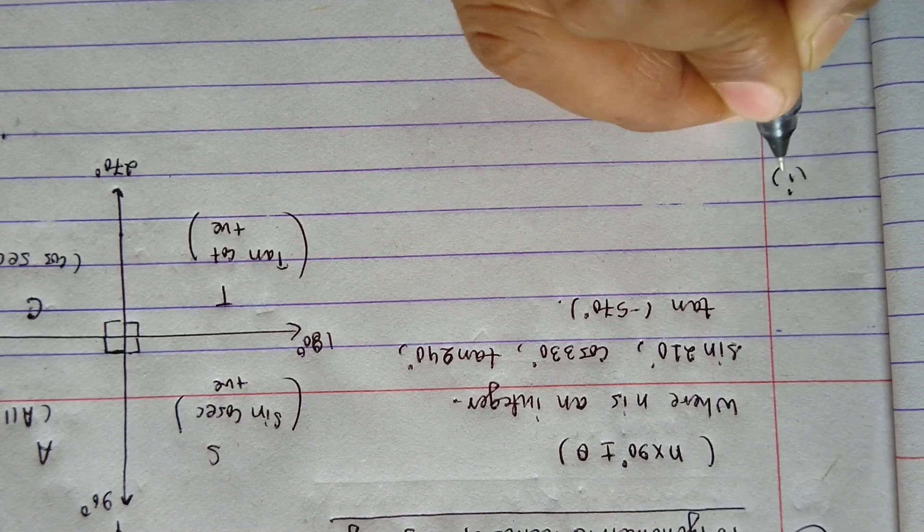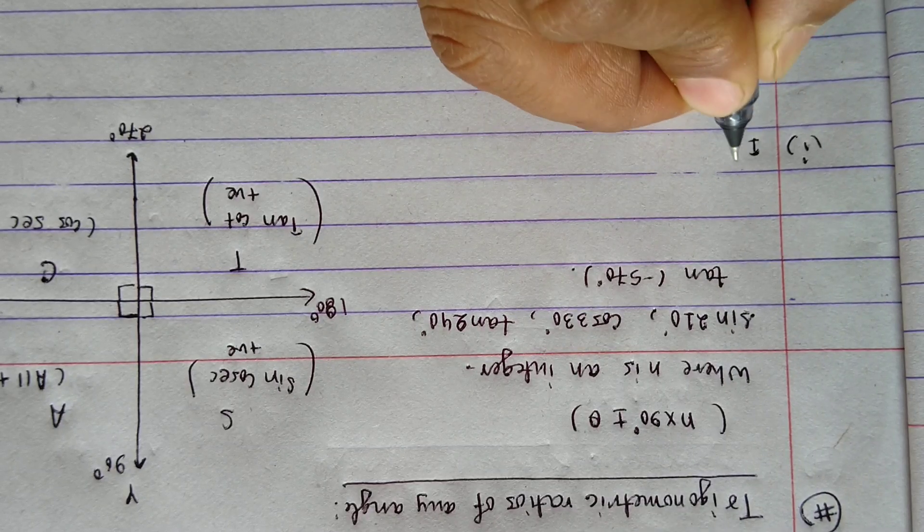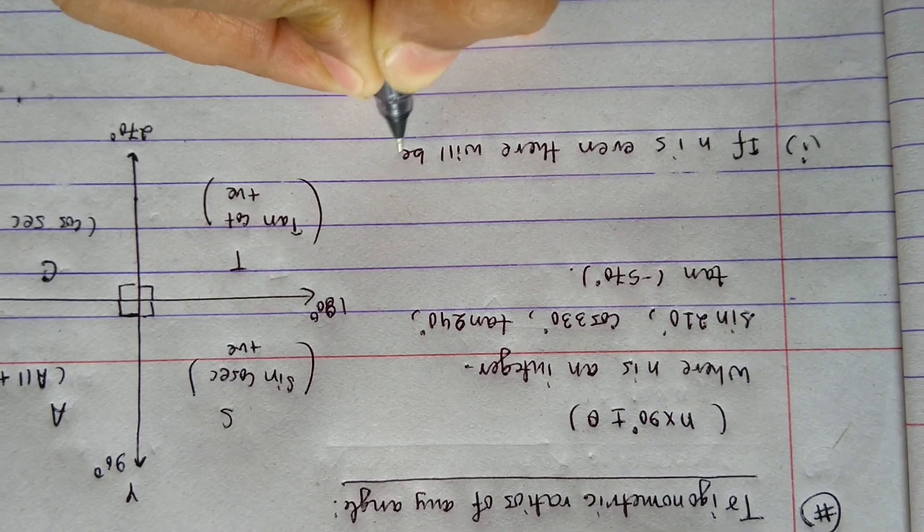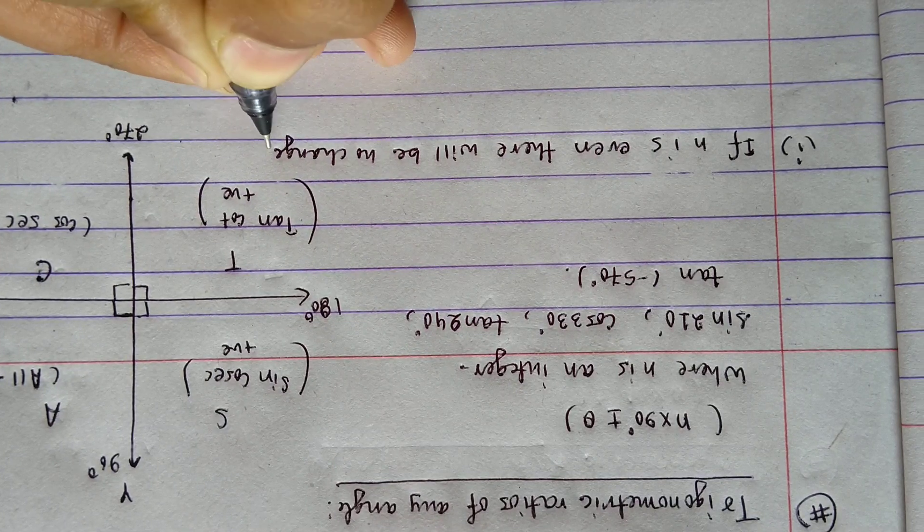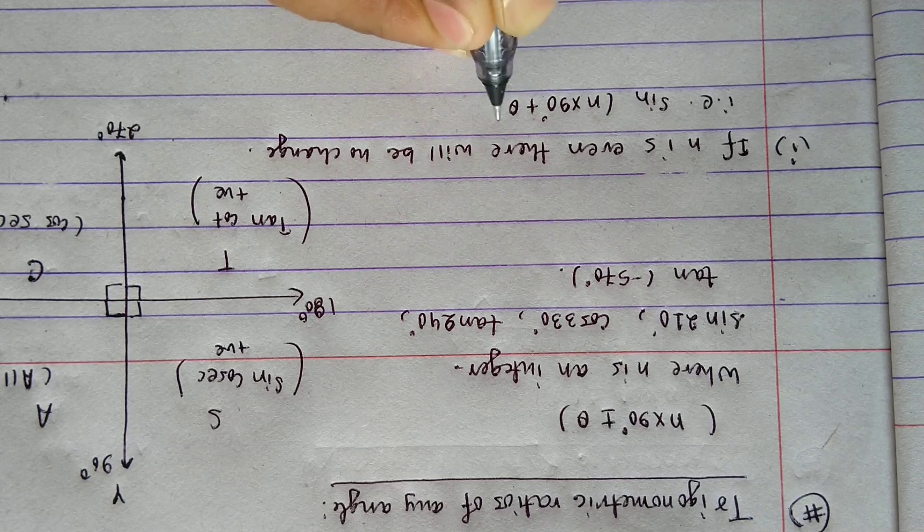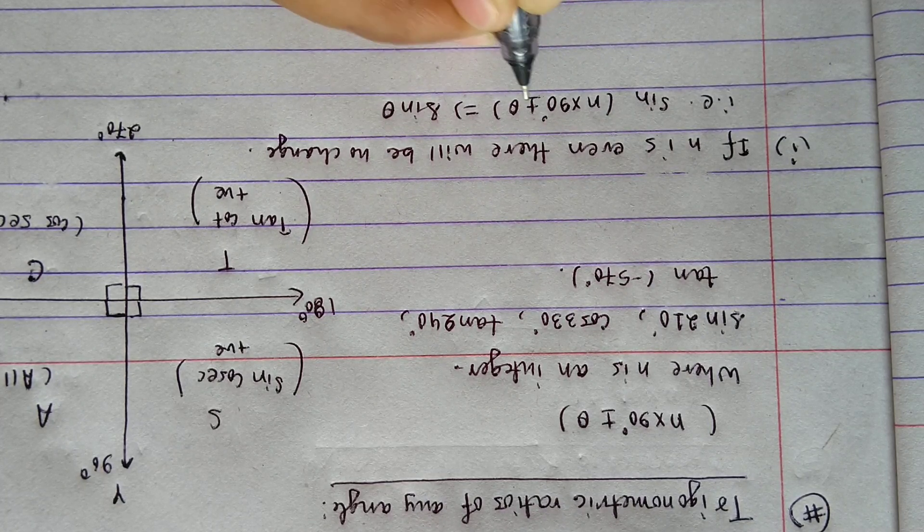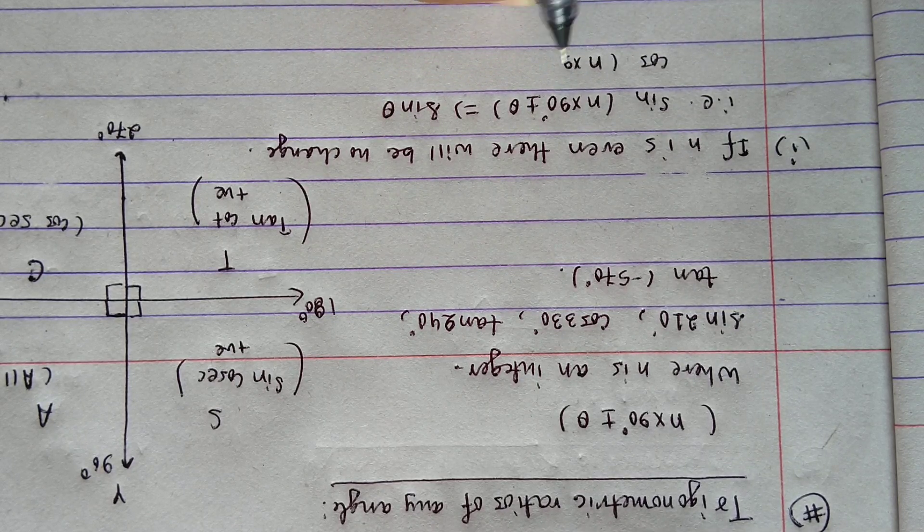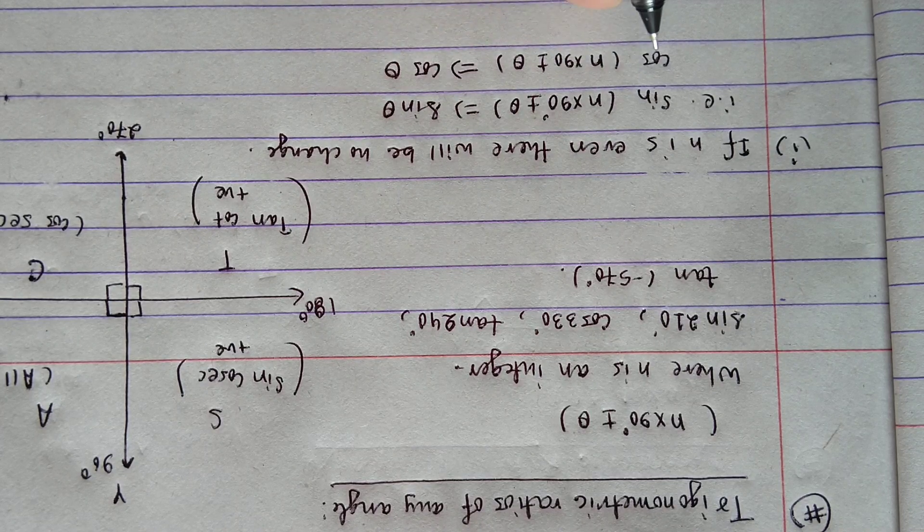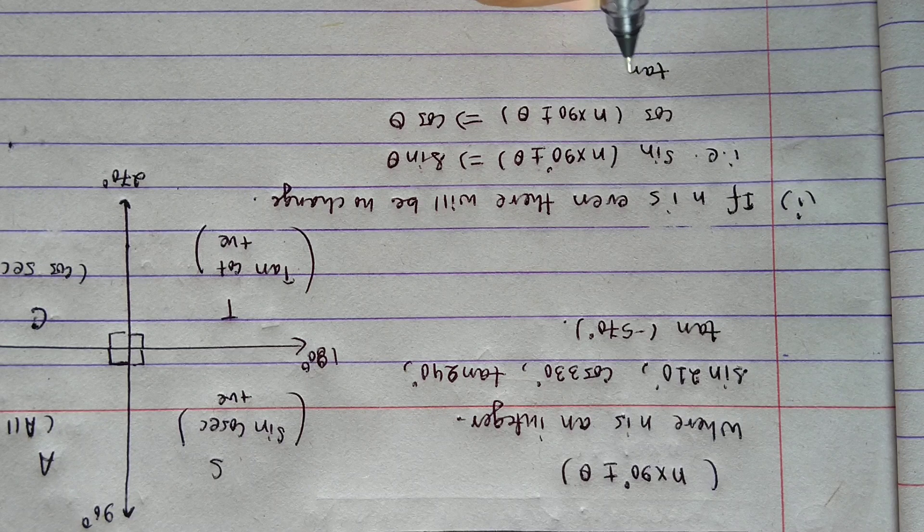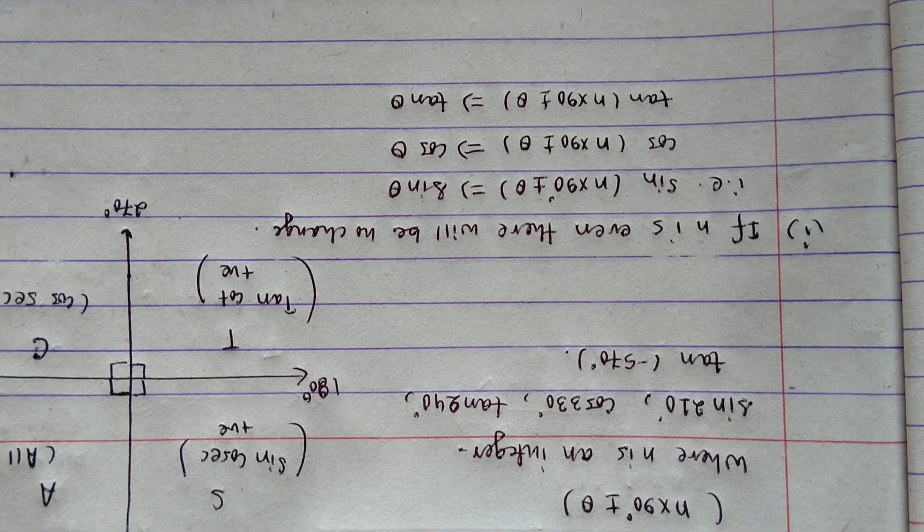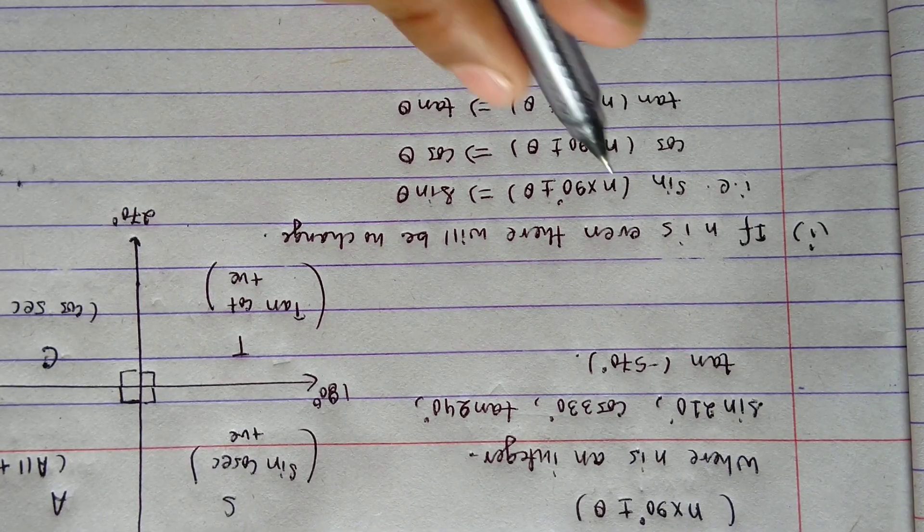Your first step is you have to identify whether n is even or odd. If n is even, there will be no change. That is, sine becomes sine, cos becomes cos. There is no change: sine has become sine, cos is cos. Similarly, tan is also tan. Others also: cosec n into 90 plus minus theta equals cosec. So what does this mean? It does not change.